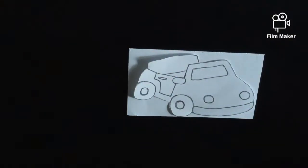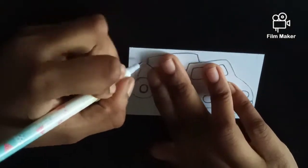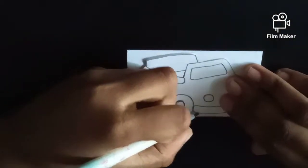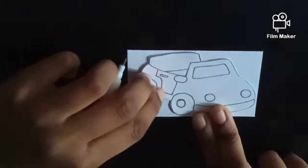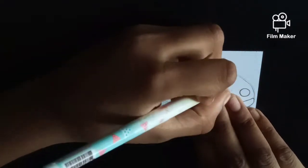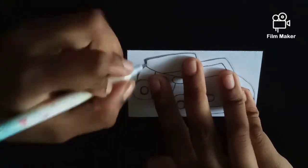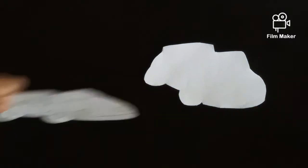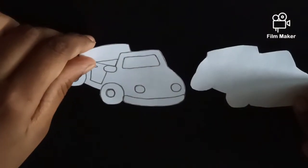Place it on top of the other paper and trace it out. Cut it along the outline. Now we have two of them.